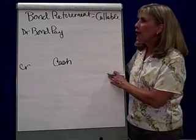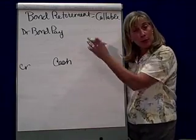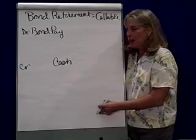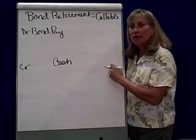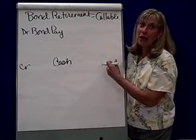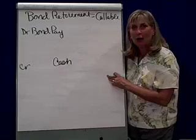It always starts with a debit to bonds payable because we're retiring the bond, and we're going to have to credit cash because you've got to pay the bond when you retire it.